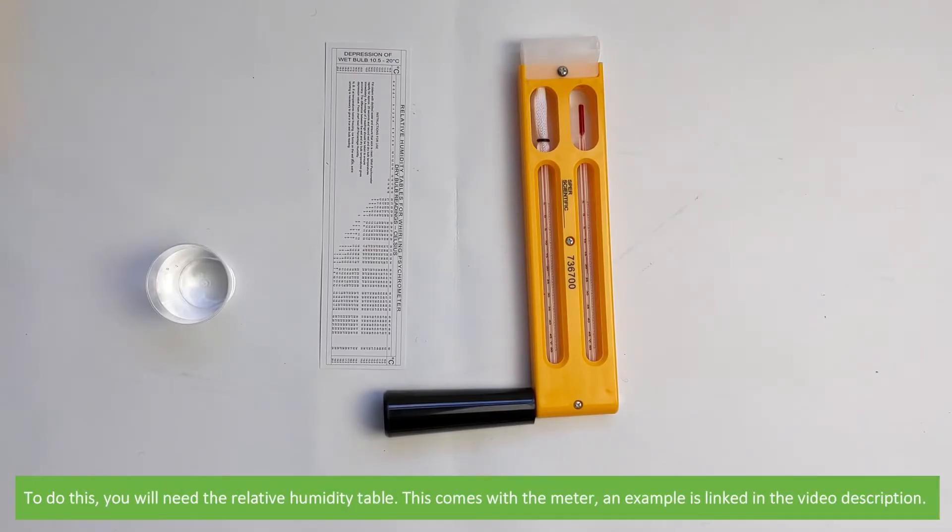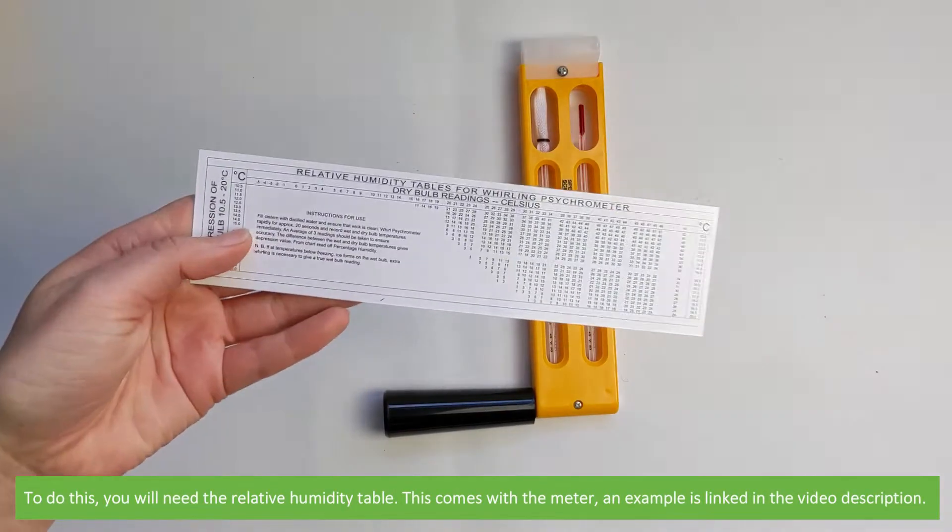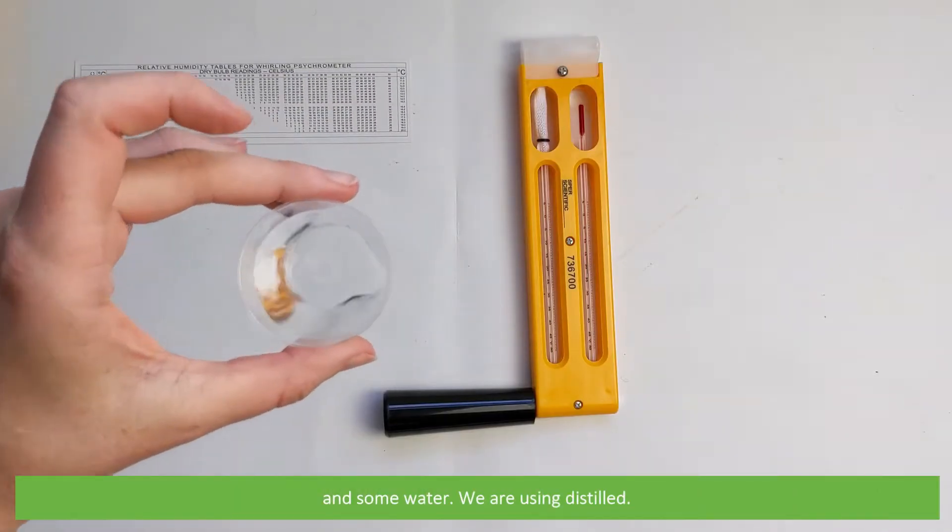To do this you'll need the relative humidity table. This comes with the meter, an example is linked in the video description, and some water—we're using distilled.